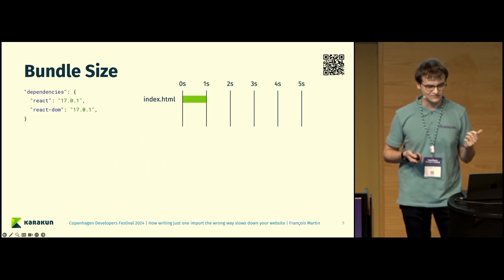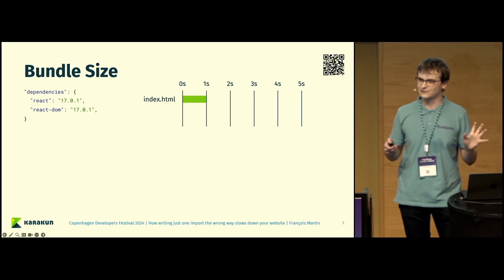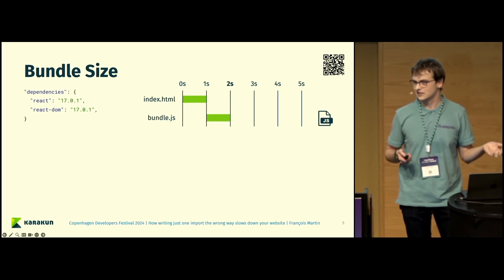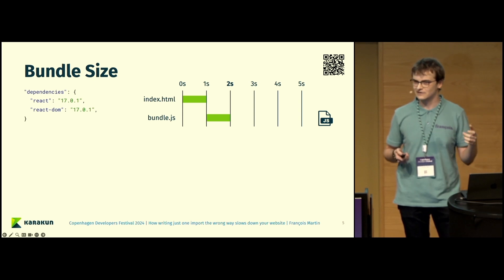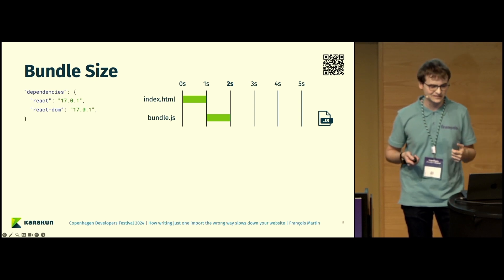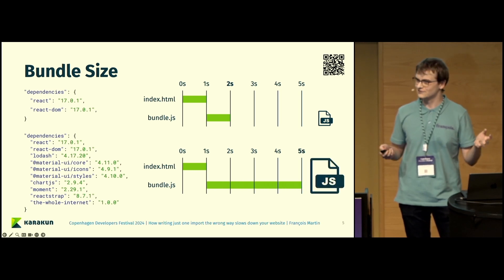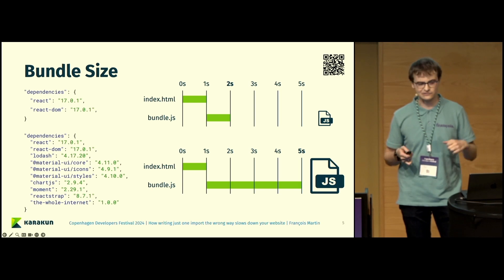Let's look at the bundle size. For this slide, if you know about tree-shaking already, ignore that for a moment. Let's say we have two dependencies. The index.html file takes one second to load. If you look at the bundle.js file, it may also take one second to load, and it loads after the index.html file since that first needs to be opened by the browser. If we have a lot of different dependencies, then the bundle.js file will take quite a bit longer because you have much more dependencies included, which makes it much bigger. Depending on your internet, how fast it is, it will take longer or shorter.